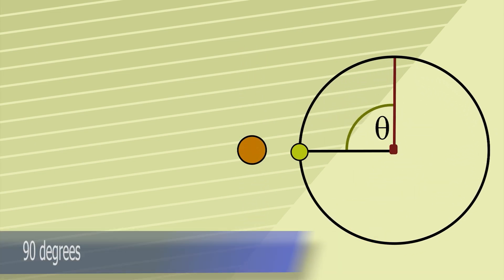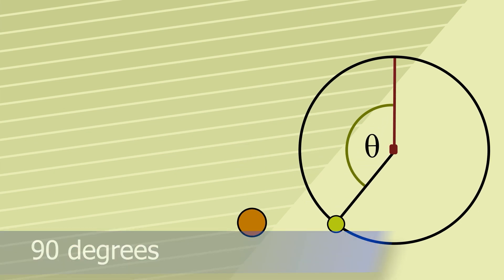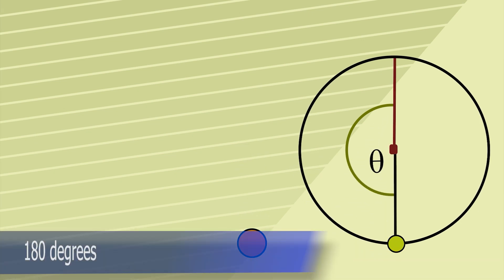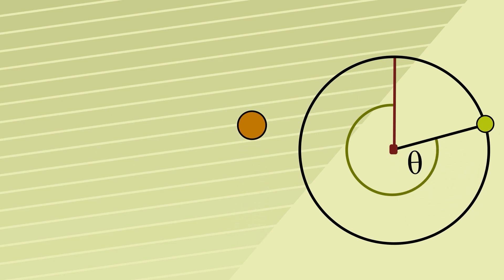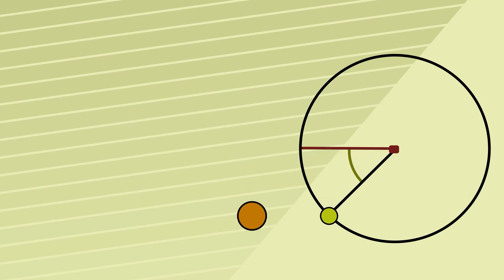So for instance at this point we're at 90 degrees whereas at this point we're at 180 degrees from our starting point. Originally we started with a zero point at 12 o'clock but this is completely up to us so we could start here at the nine o'clock position if that was more useful.